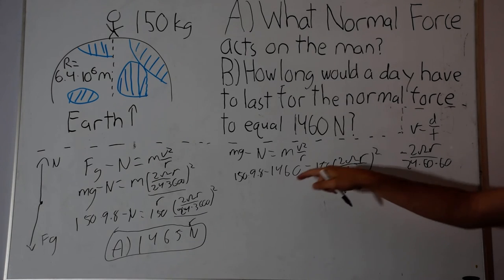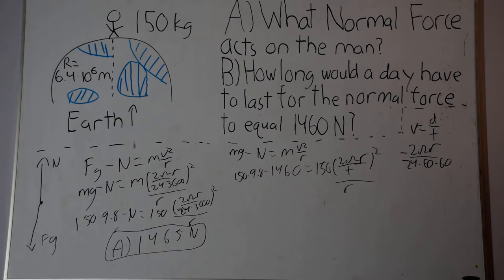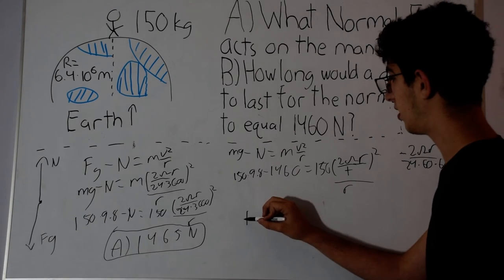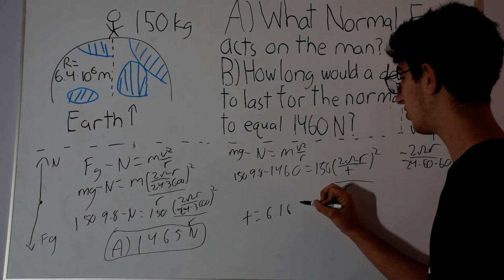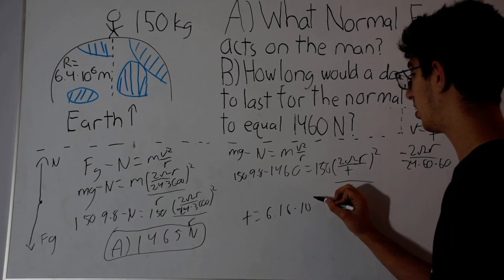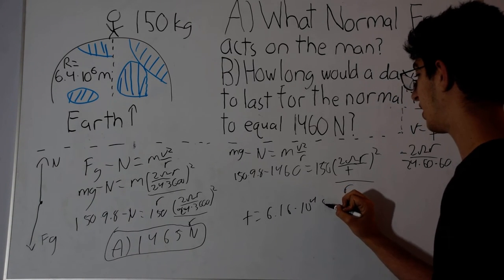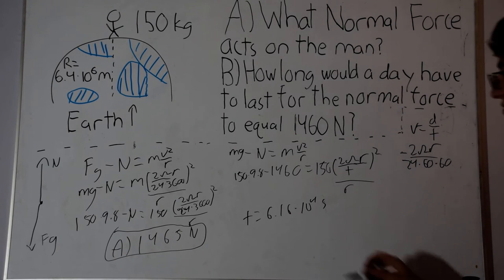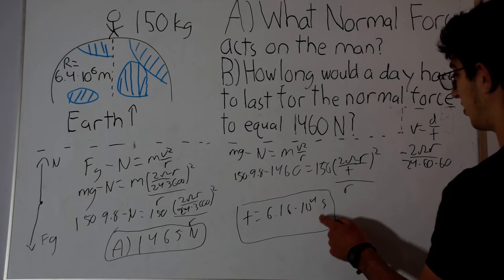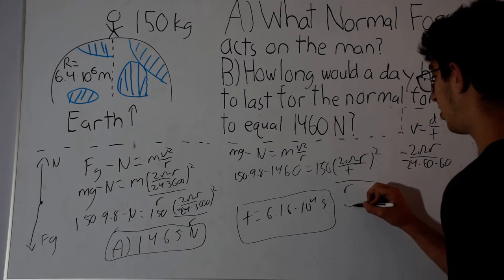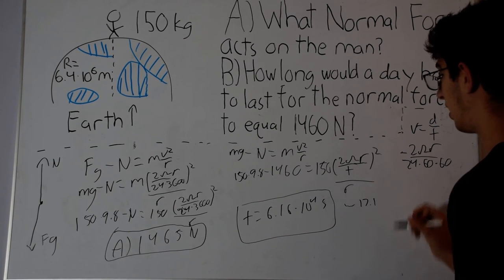Now we have our equation with just time. So you can solve for time and you'll get that the time is equal to 6.16 times 10 to the 4th seconds. This really doesn't mean much to any of us, but just to let you know that this value is equal to approximately 17.1 hours.